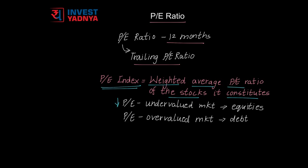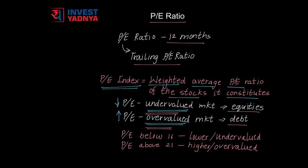A lower P.E. Ratio indicates an undervalued market, and a higher P.E. Ratio indicates an overvalued market. An overvalued market gives you an exit opportunity — a chance to book profits and shift your funds to debt, as the market may see a correction and come down. An undervalued market indicates that you should invest in equities to participate in stock appreciation. A P.E. Ratio of an index below 16 is considered lower, meaning it is undervalued, and above 21 is considered higher, meaning it is overvalued.